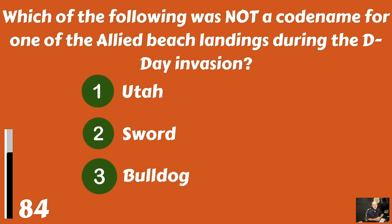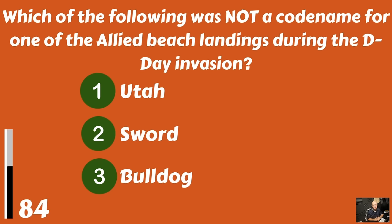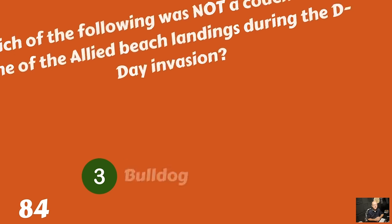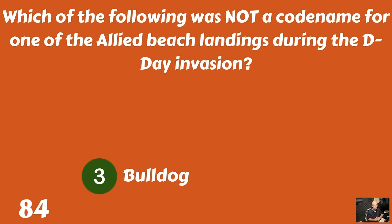Which of the following was not a codename for one of the Allied beach landings during the D-Day invasion? Utah? Sword? Or Bulldog? There was no Bulldog beach landing.